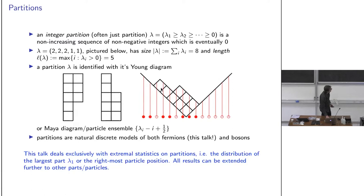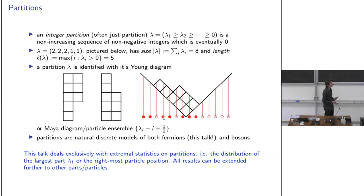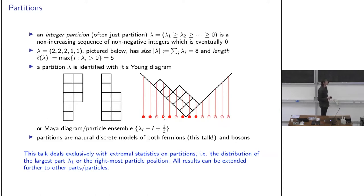This gives a bijection between so-called charge-zero sequences of particles and holes — called the Maya diagram — and actual partitions. Partitions are very natural discrete models of both fermions and bosons. This talk is fermionic only; there will be no bosonic content.